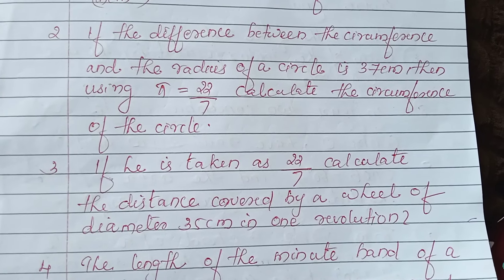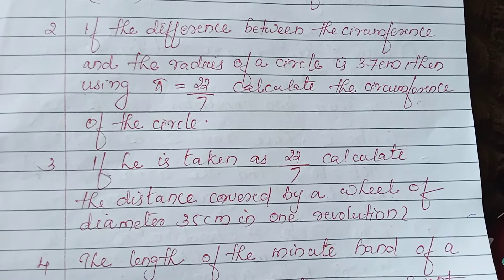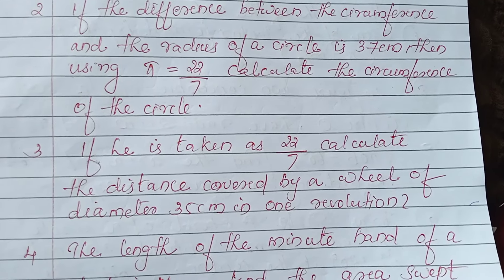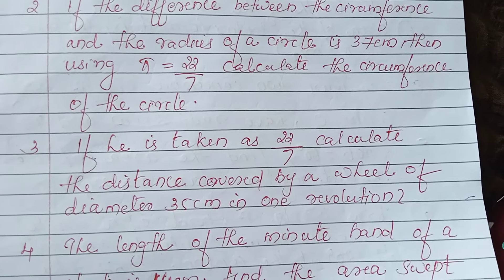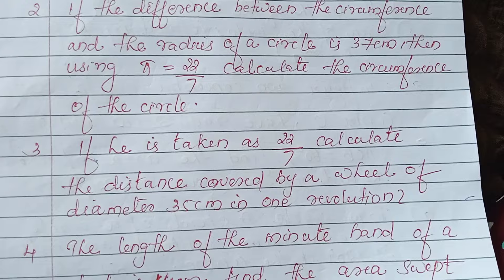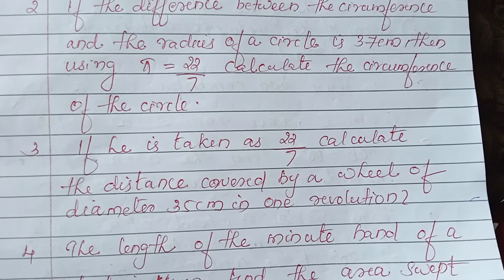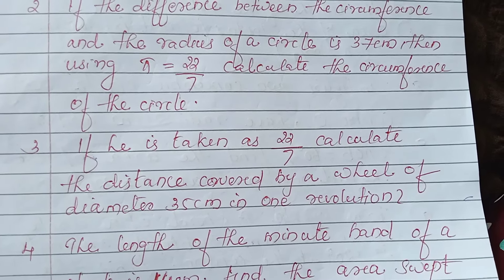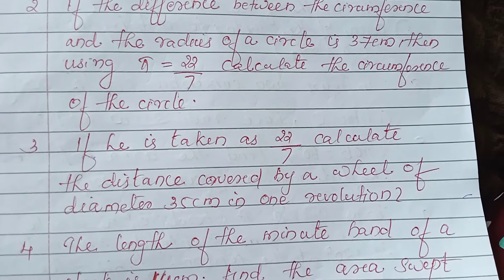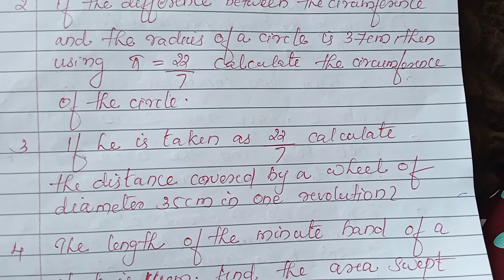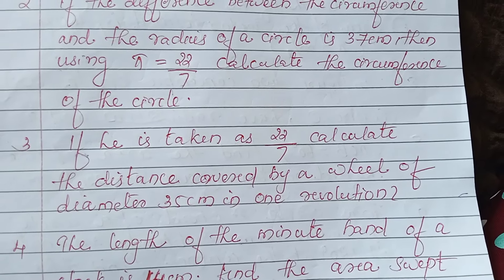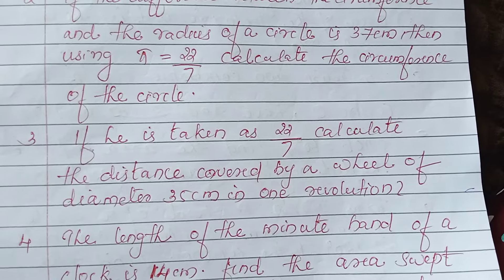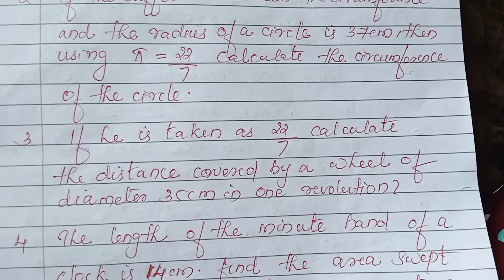Third question: using pi = 22/7, calculate the distance covered by a wheel of diameter 35 cm in one revolution. Think about it — one revolution means we have to find the circumference or area. Think about it.